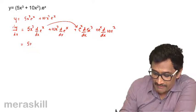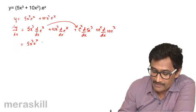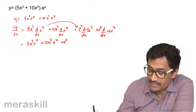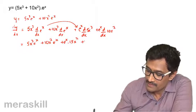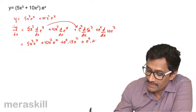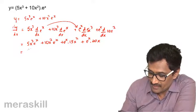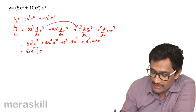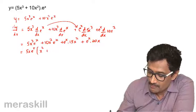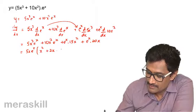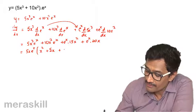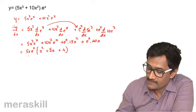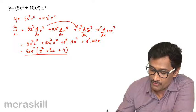This gives 5x³·e^x + 10x²·e^x + e^x·15x² + e^x·20x. We can take 5x·e^x as a common factor and simplify to get the final derivative expression.